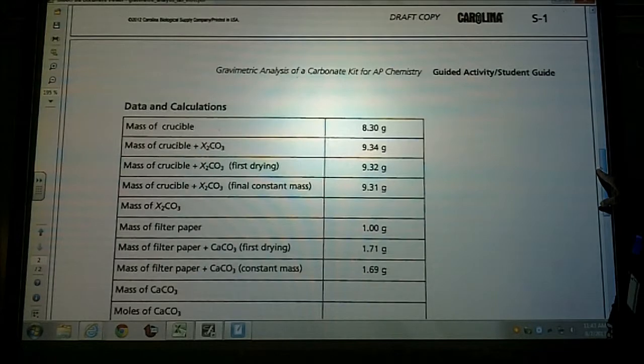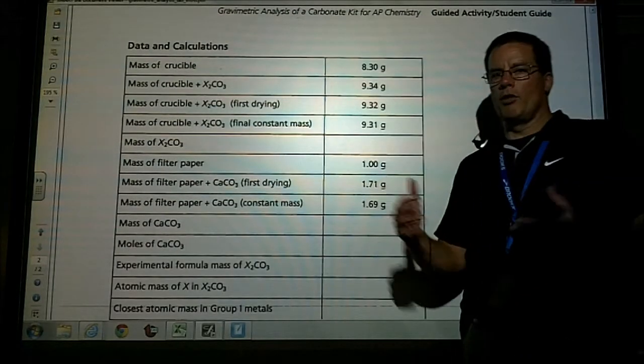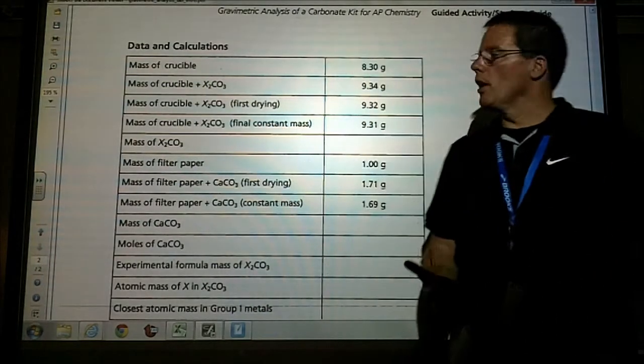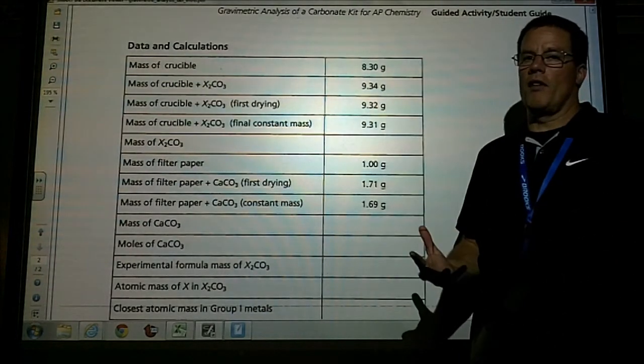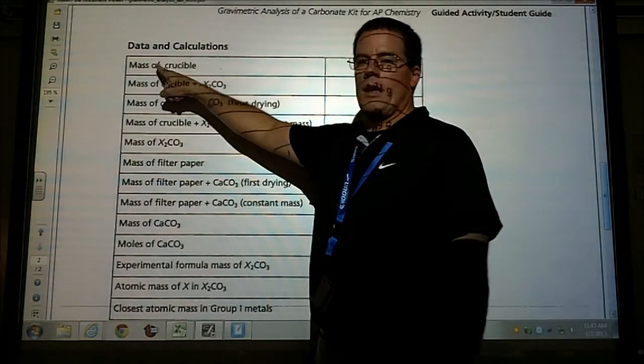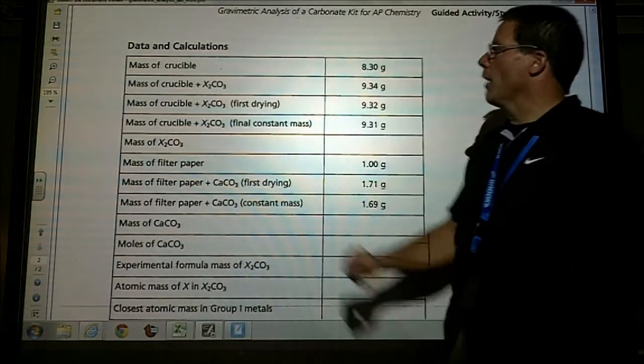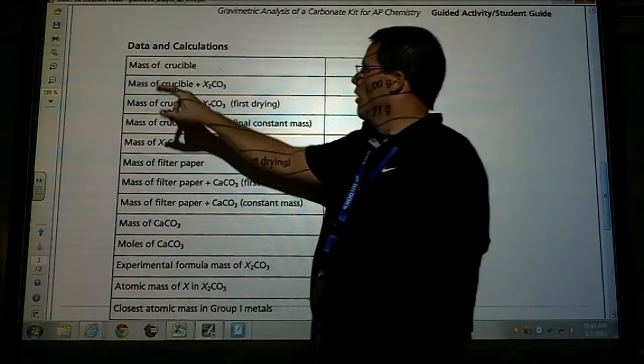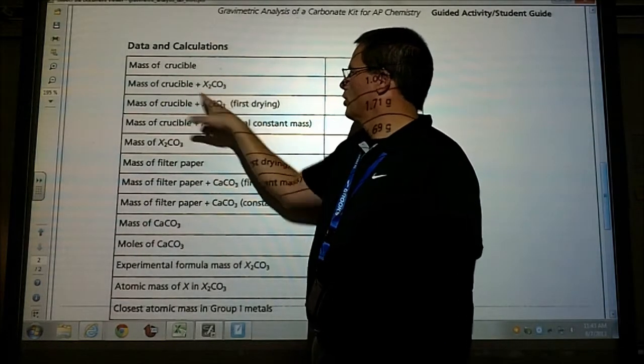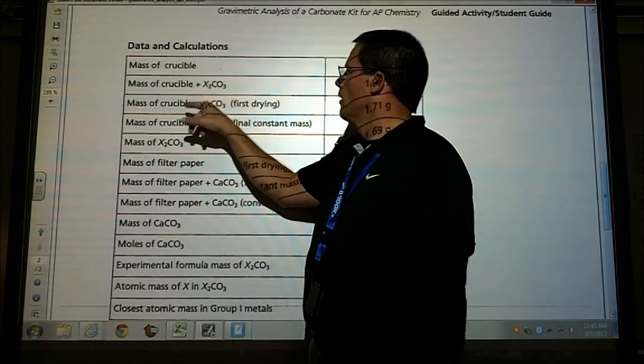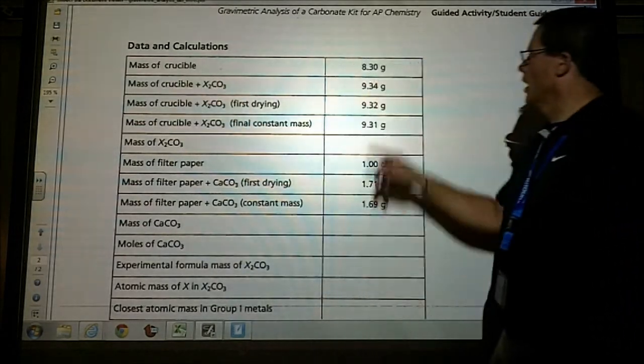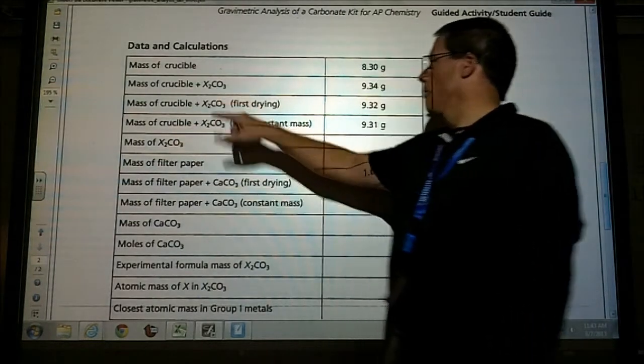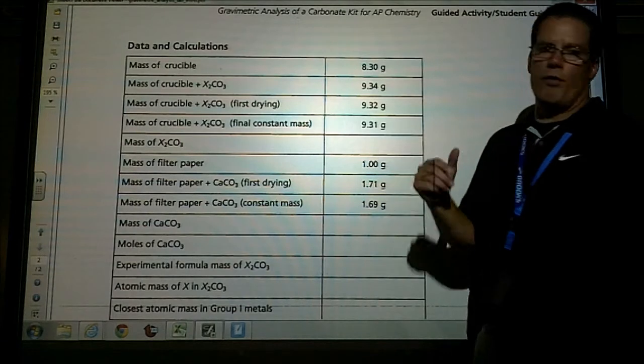Here's the data that was collected in this lab situation. Here it says crucible - we used an evaporating dish, so wherever you see crucible, I'm going to say evaporating dish. So the first thing that we did was weighed out or massed the evaporating dish and found it to be 8.3 grams. Then we added our unknown salt, our unknown solid, and the evaporating dish and got a mass of 9.34.